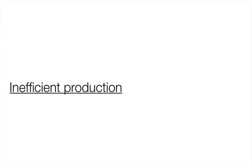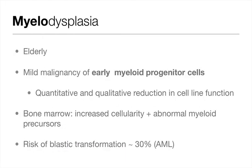Looking at inefficient production, myelodysplasia is a mild malignancy of early myeloid progenitor cells, mainly affecting the elderly. It results in both quantitative and qualitative defects in cell lines. Bone marrow biopsy shows increased cellularity and abnormal myeloid precursors. Importantly, there is a risk of blastic transformation to acute myeloid leukaemia in approximately 30% of cases.